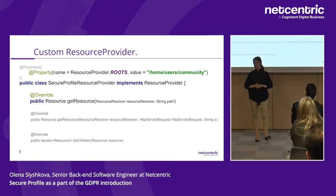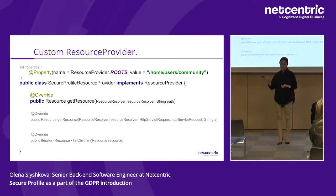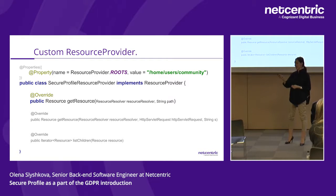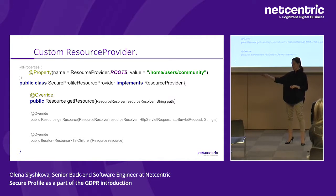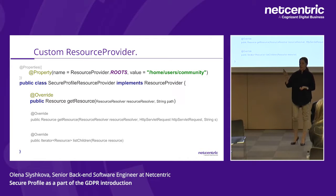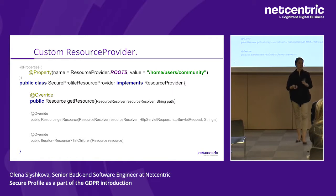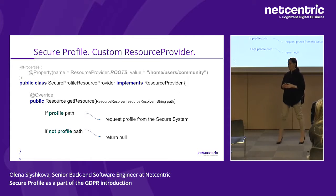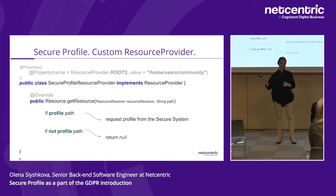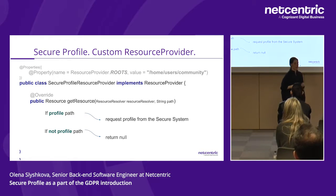The second important method is getResource: given the path, we return the resource. One thing to note: providerRoots covers a large tree — not only profile nodes but also tokens and rep:policy nodes. For resources we don't want to control, we simply return null. Sling treats null as an inability to provide the resource and passes the request to the next provider in the chain.